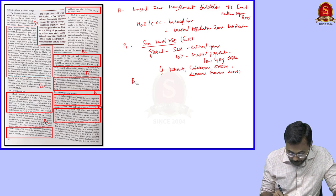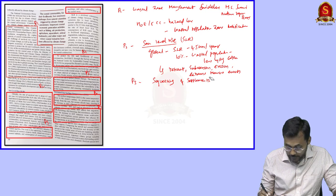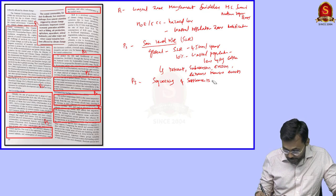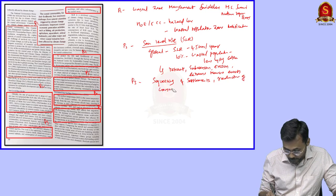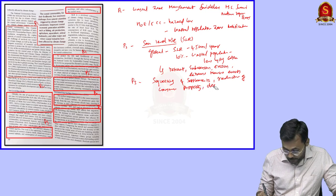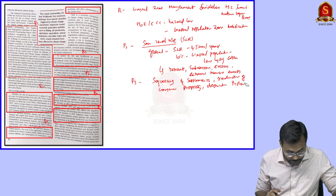Paragraph 3 covers the impacts: squeezing of settlements as people need to leave their place of residence because of sea level rise, reduction of common property and government property, and destruction of infrastructures like roads. These are all problems caused by sea level rise.